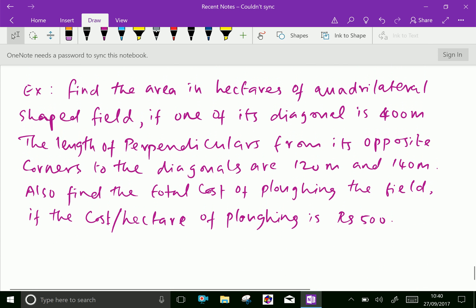Now, one more problem. Find the area in hectares of a quadrilateral shaped field, if one of its diagonals is 400 meters. The length of perpendiculars from its opposite corners to the diagonal are 120 meter and 140 meters. Also, find the total cost of plowing the field if the cost per hectare of plowing is Rs. 500.